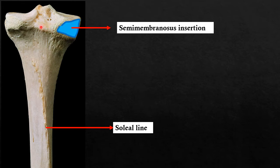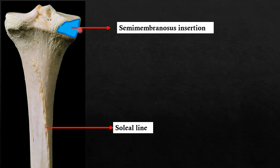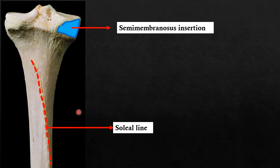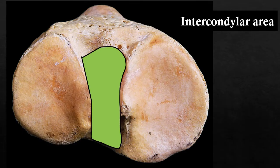Moving to the posterior aspect of the tibia, we can identify a groove on the medial tibial condyle. This groove may be marked in examinations and you will be asked to identify the muscle attachment. The muscle attaching here is the semimembranosus. On the posterior surface of the shaft of the tibia there is an oblique line running from lateral to medial called the soleal line. The muscle attached to the soleal line is the soleus, or the peripheral part of the leg.